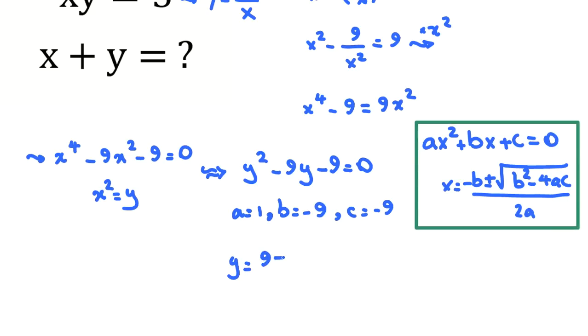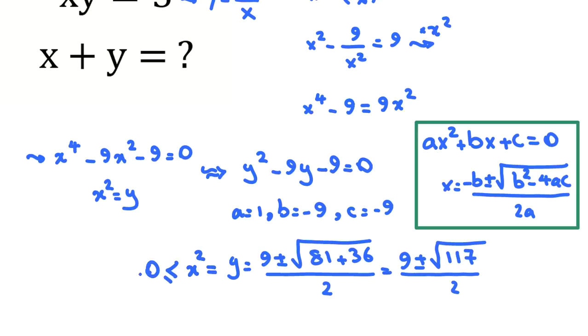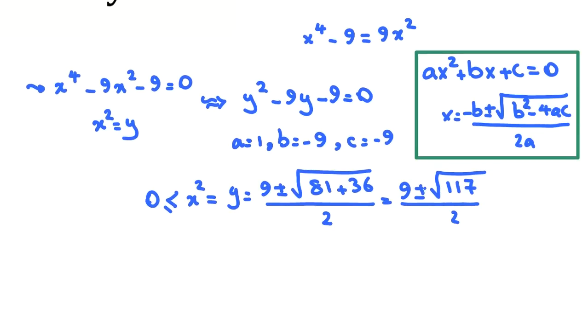We want to use this. So, y will be negative b, 9 plus minus b squared 81 minus 4ac. a is 1, c is negative 9. So minus 4ac will be plus 36 over 2a, which a is 1. So it will be 9 plus minus 117 all over 2. y was x squared. We know x squared is at least 0. So here, which sign should we select? If we select negative, then it will be negative. But this x squared should be non-negative. So we conclude x squared, which is y, equals 9 plus root 117 over 2.